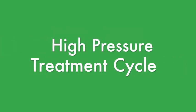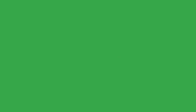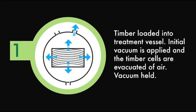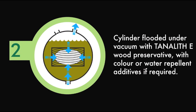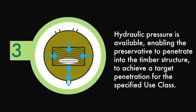A typical treatment cycle will involve the following process stages. Once the timber is loaded within the secured vessel, an initial vacuum is applied which evacuates air from the cells of the timber. The cylinder is then flooded under vacuum with a wood preservative. Hydraulic pressure is then applied allowing the preservative to penetrate into the timber structure to achieve a target penetration that is suitable for the eventual end use of the timber.